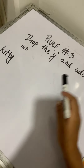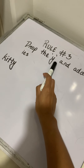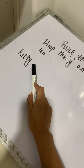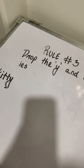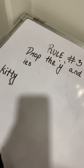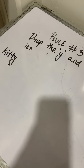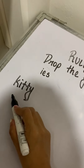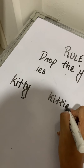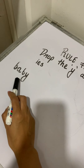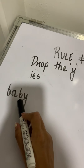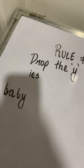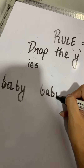Now let's move on to rule number 3. Rule number 3 is: drop the Y and add IES. When the Y follows a consonant, you drop the Y and add IES. Just so you know, a consonant is a letter that is not A, E, I, O, U. So kitty will become kitties. Now let's take a look at the word baby. Y follows B. B is a consonant. So let's drop that last letter Y and add IES. You will have B-A-B-I-E-S — babies.